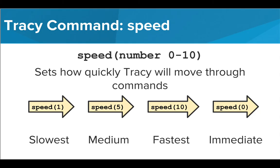You can call this command at the beginning of your code to set the speed for the entire program, or call it halfway through to just slow down or speed up a certain section. To use the speed command, you type a number from 0 to 10 in the parentheses. A speed of 1 is the slowest, 10 is very fast, and 0 is almost immediate.